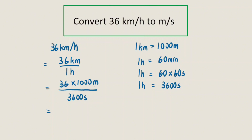Now the meters and seconds give us our final units of meters per second. Using a calculator, we compute 36 times 1,000 divided by 3,600, and we get 10 meters per second.